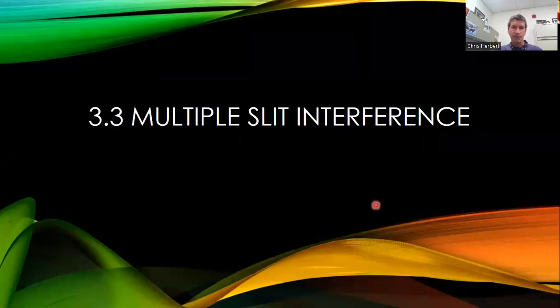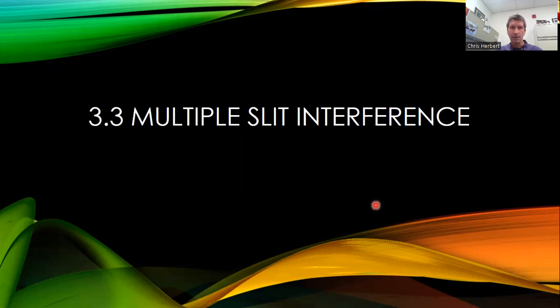What happens when you have more than two slits? What type of interference pattern are we going to get? This actually jumps a little bit ahead to a topic that we cover in the next chapter with diffraction gratings. But we're going to take a look at how when we go from two to three to multiple slits, how that influences the pattern that we see.